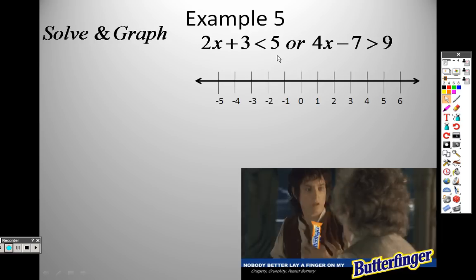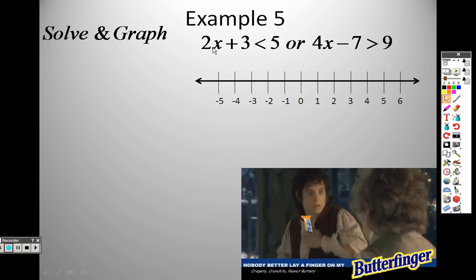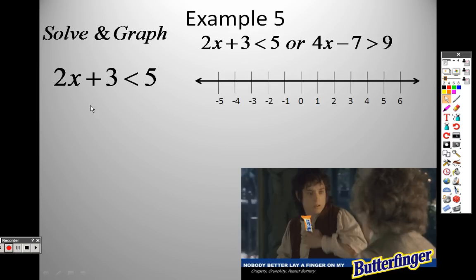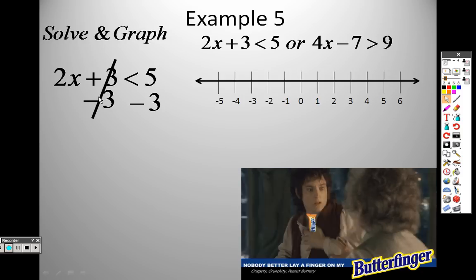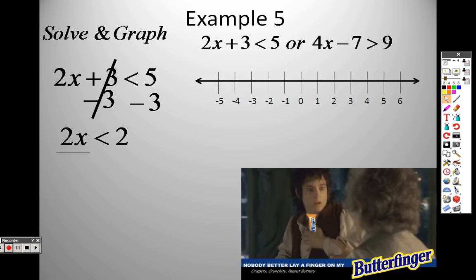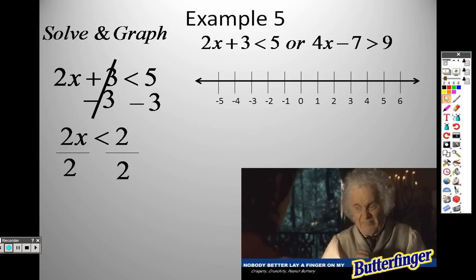So with this one, this is just two different inequalities that I'm asked to solve. So to solve the first one, to get X by itself, I would subtract 3 on both sides. Because it's plus 3, so minus 3 is the opposite. So I get 2X is less than 2. So since it's multiplication, 2 times X, I divide both sides by 2, and I get X is less than 1.